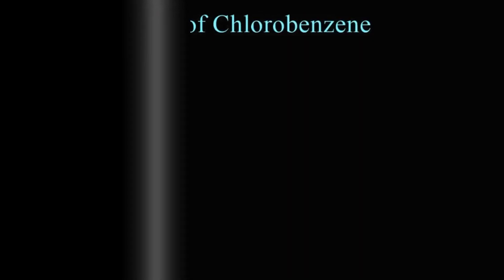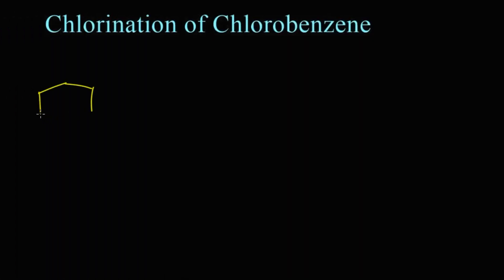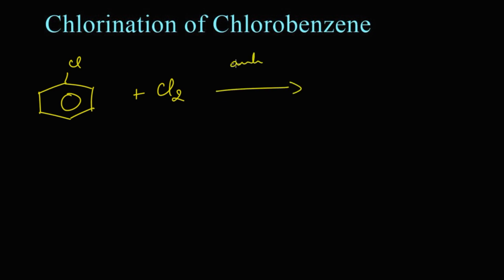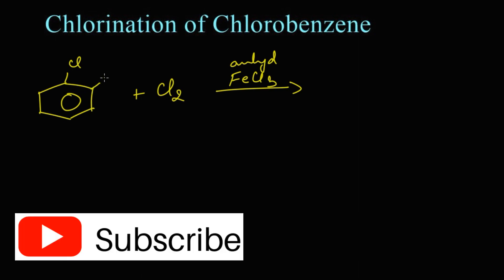Let's learn the reaction: chlorination of chlorobenzene. This chlorobenzene is going to be chlorinated — that is, a chlorine molecule is going to add with this chlorobenzene. The reaction takes place in the presence of anhydrous ferric chloride, FeCl₃. Chlorobenzene is an ortho and para directing group.